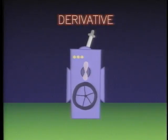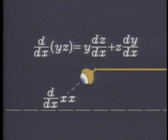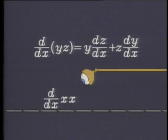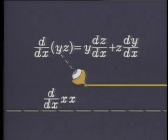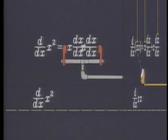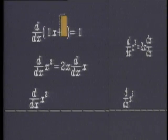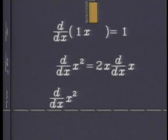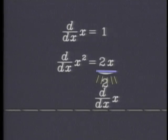Inside the derivative machine, there is the pattern recognizer, the special case generator, the adder, the identity canceler, and the substituter.